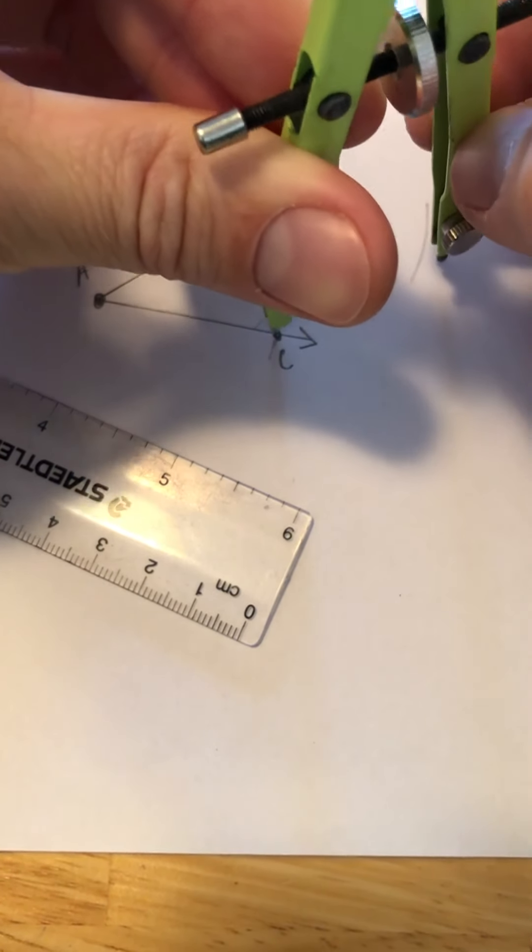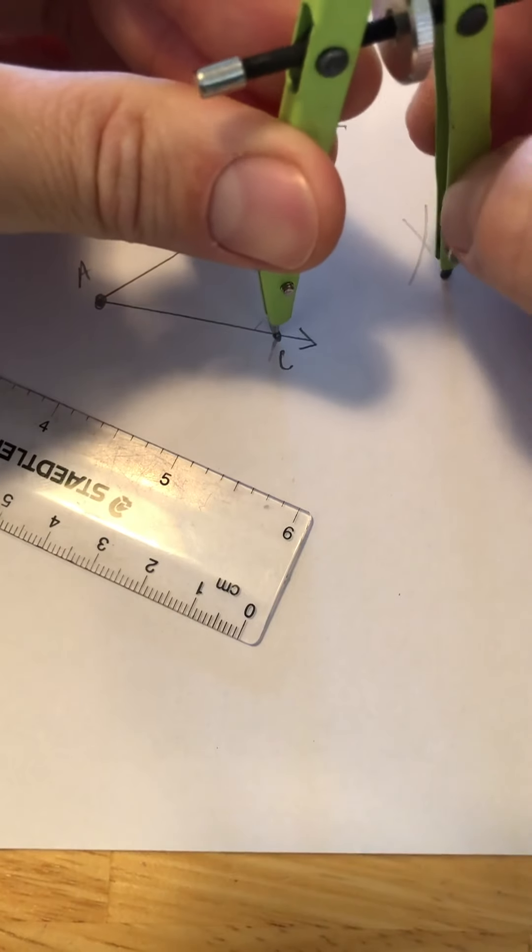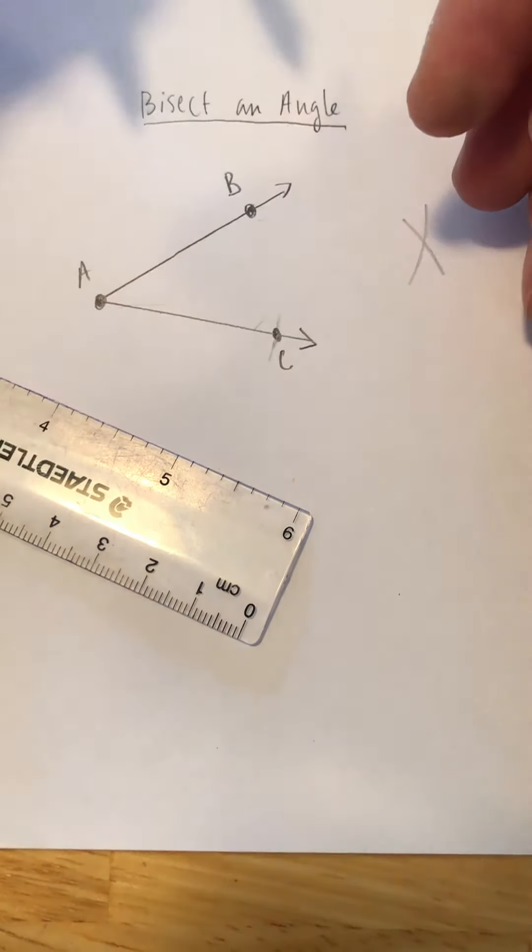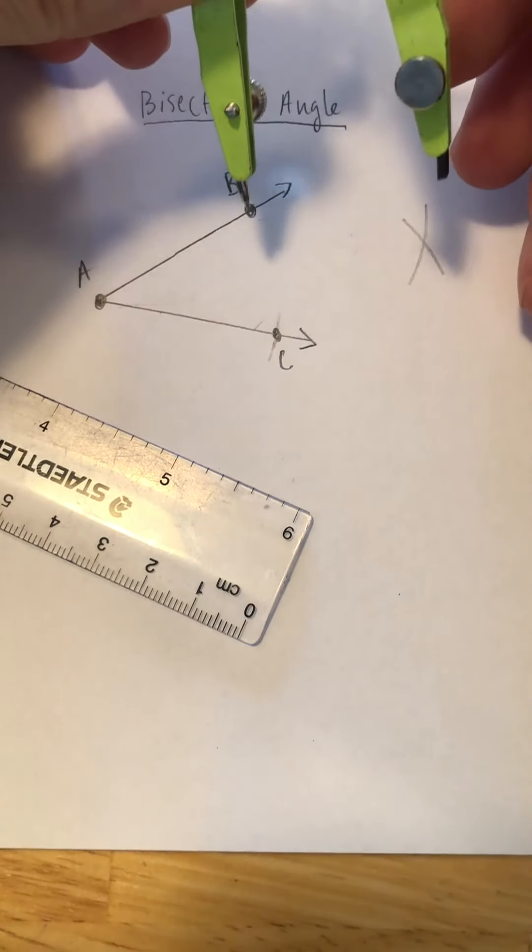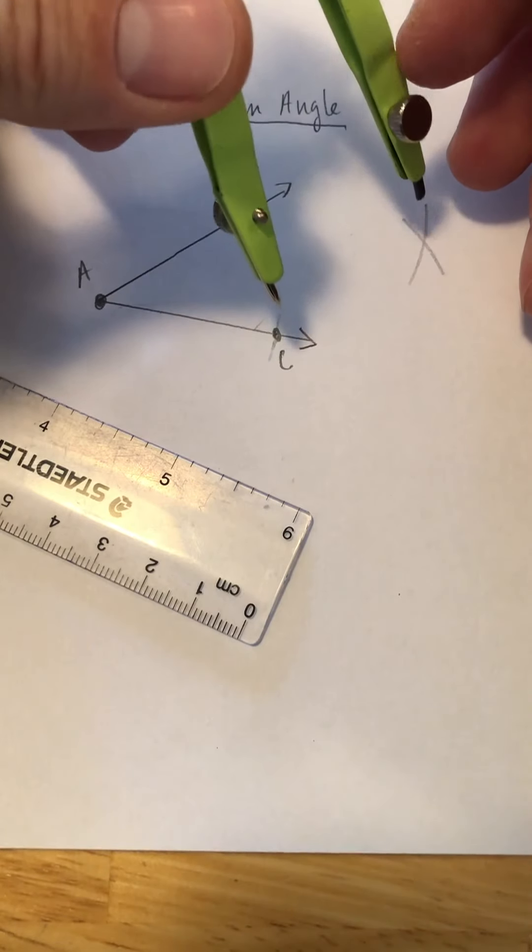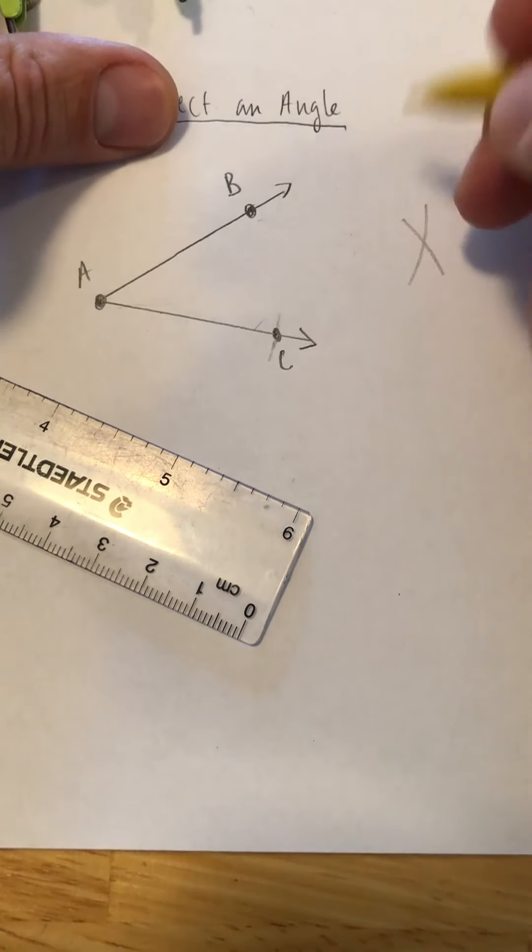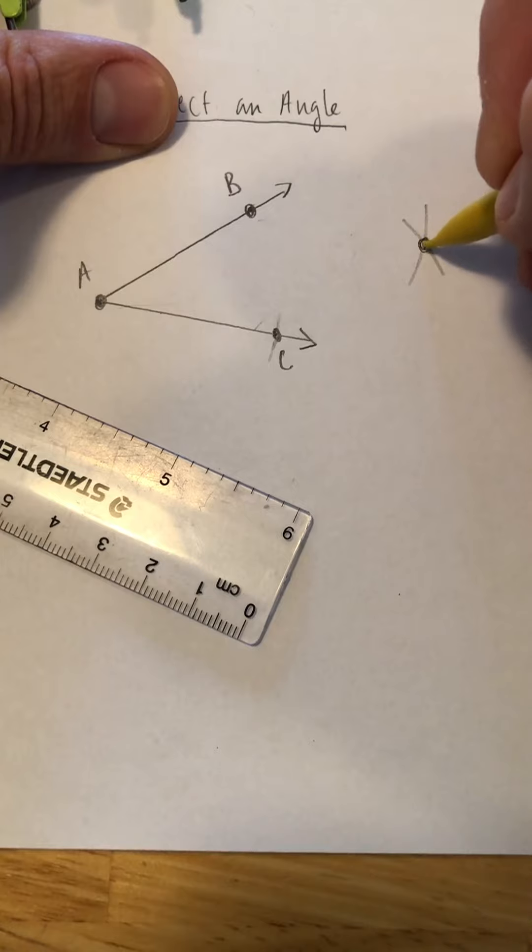And I make an intersection mark here from where it was on AB. So I make a mark from B, I make a mark from C, and where they intersect will be the same distance, and I make that my point D.